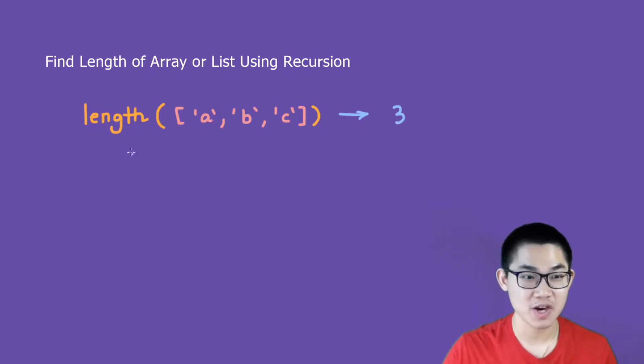So let's say we have a function called length here, and we have a list, then the output of this function will be 3 because there are 3 elements inside this list.